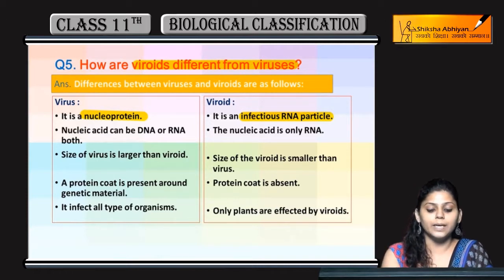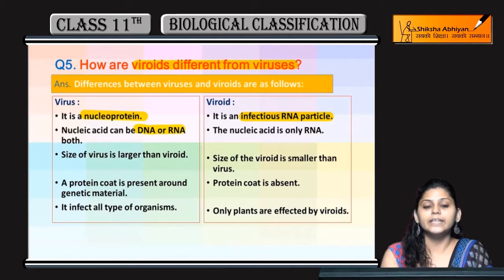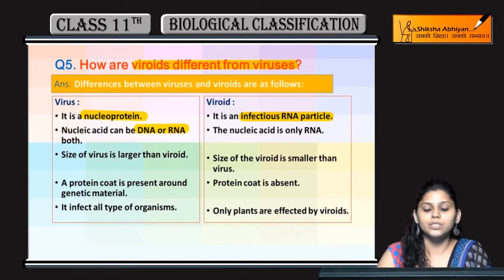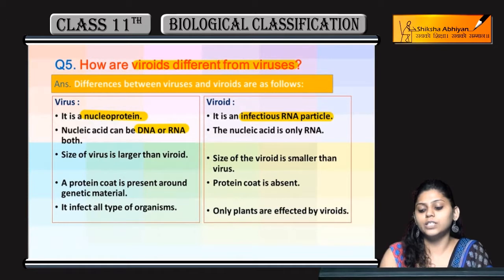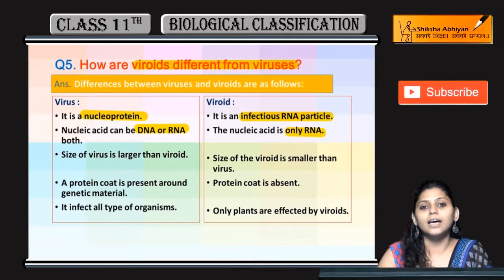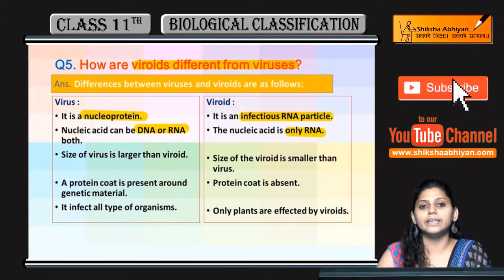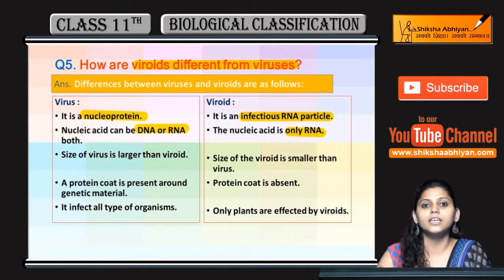The nucleic acid of viruses can be either DNA or RNA, whereas in viroids, the nucleic acid is only RNA — viroids form only infectious RNA.